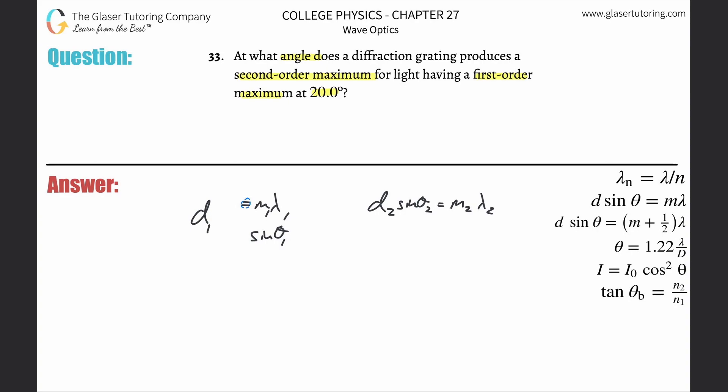What I'm also going to do here is get rid of the 1 and 2 subscript for the wavelength because they are the same. When I put these equations together, I'm going to cancel anything that has stayed the same.